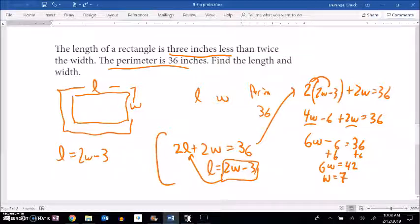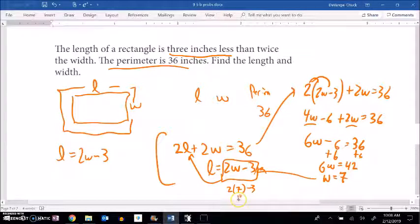So if W is 7, I can plug it back in to find what L is. I'll just plug it in here. Two times seven minus three. Fourteen minus three. I think that is 11. So if the width is 7, length must be 11.